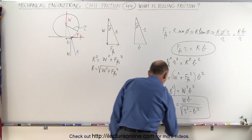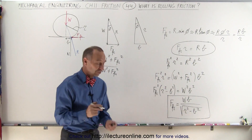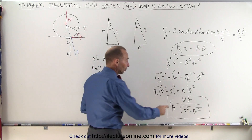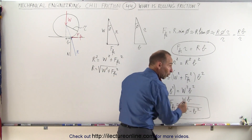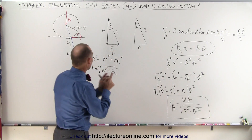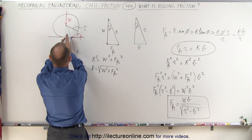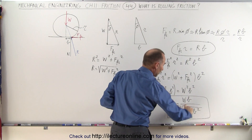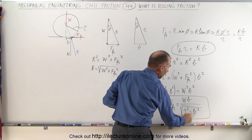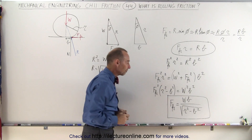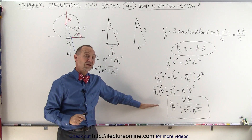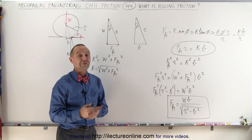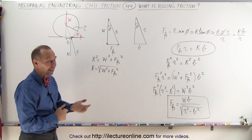Now we have an equation that allows us to find the rolling friction force by knowing the load on the wheel and the coefficient of rolling friction — which is the distance the tire or wheel deforms from the central point to where it no longer makes contact — divided by the square root of the radius squared minus the coefficient of rolling friction squared. And that's how it's done.